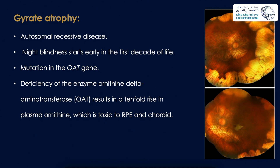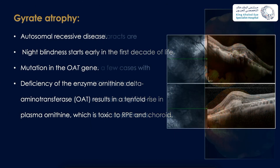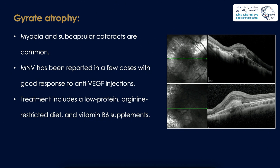Gyrate dystrophy is an autosomal recessive disease where nyctalopia starts early in the first decade, caused by mutation in the OAT gene. There is deficiency of the enzyme ornithine delta-aminotransferase, resulting in a tenfold rise in plasma ornithine, which is toxic to RPE and choroid. Patients usually have myopia and subcapsular cataract. MNV has been reported in a few cases with good response to anti-VEGF injections. Treatment also includes a low-protein, arginine-restricted diet and vitamin B6 supplements.